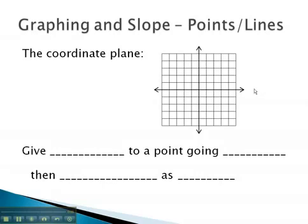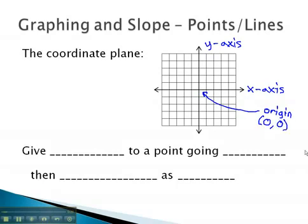The coordinate plane is an intersection of two number lines. The horizontal number line is called the x-axis. The vertical number line is called the y-axis. These two number lines intersect at a key point called the origin, which is 0 for the x-number line and 0 for the y-number line.